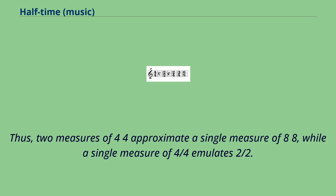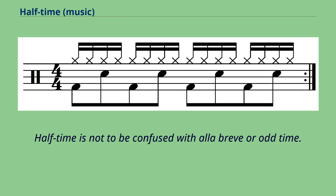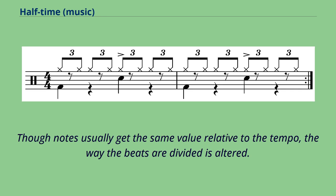Thus, two measures of 4/4 approximate a single measure of 8/8, while a single measure of 4/4 emulates two halves. Halftime is not to be confused with alla breve or odd time. Though notes usually get the same value relative to the tempo, the way the beats are divided is altered.